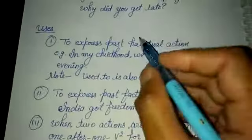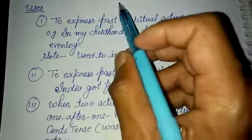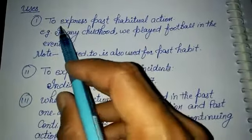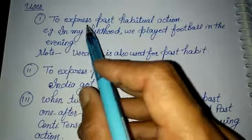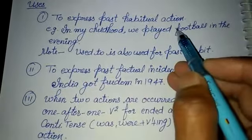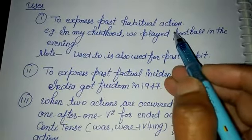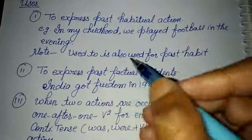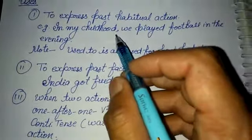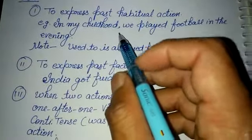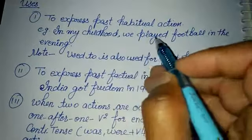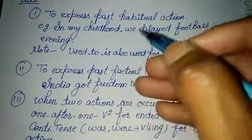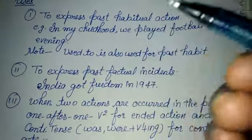The first point in uses: to express a past habitual action. We use the verb's second form to show habits we had in the past. For example: 'In my childhood, we played football in the evening.' 'My grandmother woke me up in the morning.'